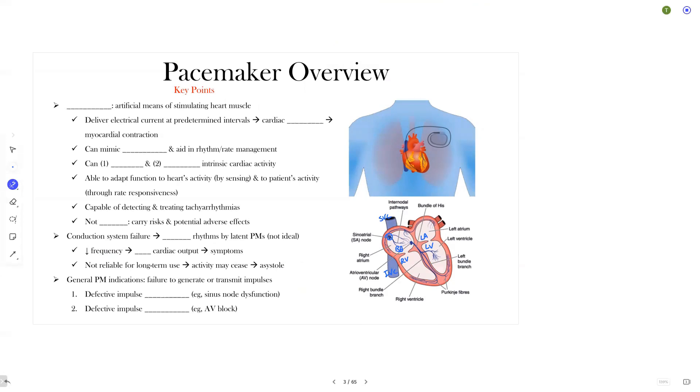So therefore, as you may expect, pacemakers are indicated if the impulse formation or impulse conduction is impaired. So formation and conduction, if that's impaired, that may be an indication for pacemakers. We can see it with such as in patients with symptomatic bradycardia. Now, a common cause of defective impulse formation is sinus node dysfunction, so the sinus node not working. And a common cause of defective impulse conduction was AV block. The modern pacemakers are very sophisticated and can take over the roles of impulse formation and impulse conduction. And we're going to start to learn that they can adapt their function to the heart's own activity by sensing as well as the needs of the body through rate responsiveness.